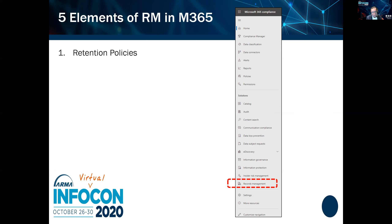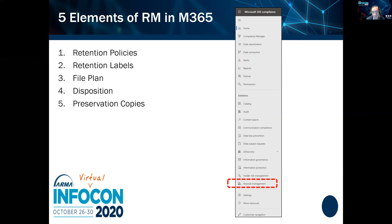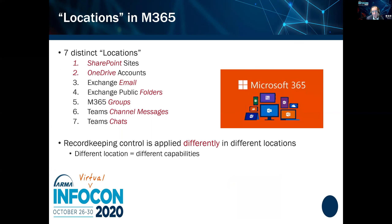Here are the five things we're going to cover: retention policies, retention labels, the file plan (which is what Microsoft calls a retention schedule), disposition at the end of the life cycle, and preservation copies. We'll cover each of those in some detail.